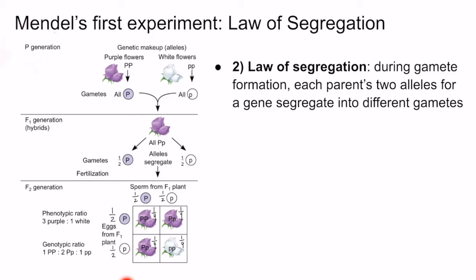In the parental generation, each true breeding plant is homozygous for either the dominant allele, in the case of the purple flower plants, or the recessive allele, in the case of the white flower plants. Because the P generation consists of homozygous individuals, each organism always passes down the same allele to the next generation. So the purple flowers always pass down the big P allele and the white flowers always pass down the small p allele, meaning the F1 hybrids all have the big P, small p genotype. When the F1 hybrids undergo meiosis, the big P and small p alleles segregate into gametes, such that half have the purple flower allele and the other half have the white flower allele.